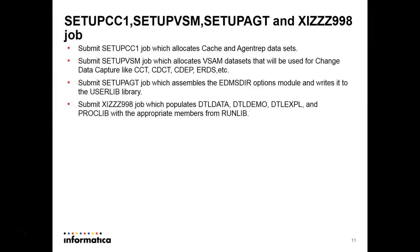After submitting SetupBulkJob, submit the following jobs sequentially. Submit SetupCC1Job, which allocates cache and agent rep data sets. Submit SetupVSMJob, which allocates VSAM data sets used for changed data capture like cctfile, cdctfile, erdsfile, etc. Submit SetupAgtJob, which assembles the EDM-STIR options module and writes it to the UserLib library. Then submit XIZZ998Job, which populates DTL-Data, DTL-Demo, DTL-EXPL, and ProcLib with appropriate members of the RunLib.